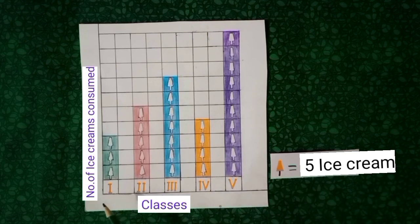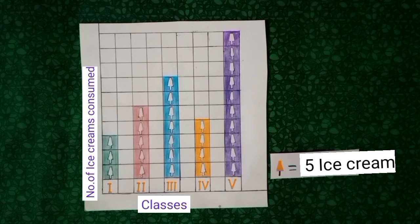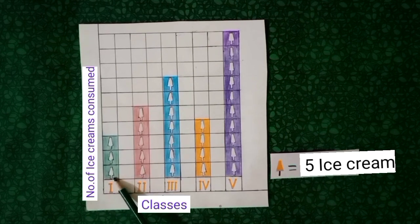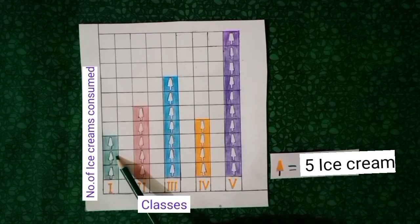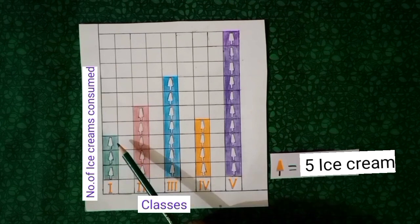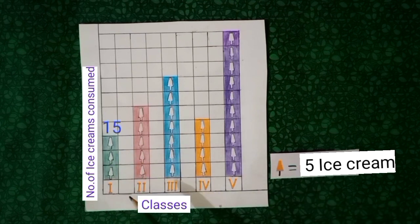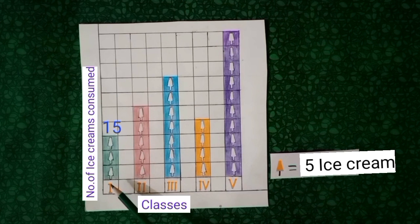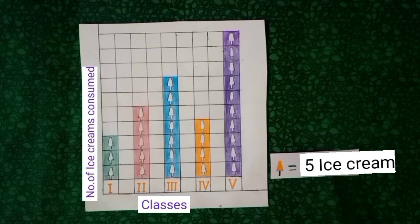Let's see how many ice creams have been eaten by first class. Counting the symbols: 5, 10, 15 ice creams. So students, 15 ice creams were eaten by first class.